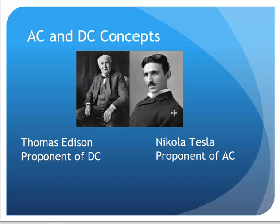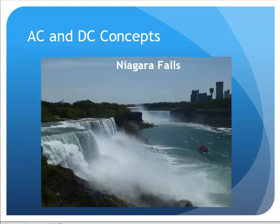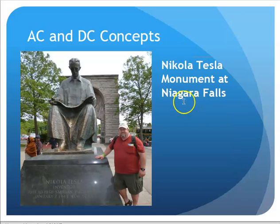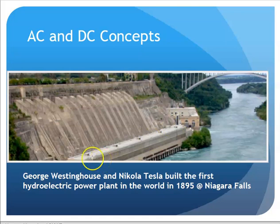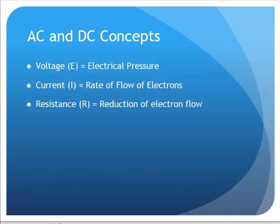Back in time there was an AC/DC competition. Edison was a proponent of DC and thought that was how things should be powered. Nikola Tesla was a proponent of AC, and we know how it ended — Tesla's approach is how we power our houses. Niagara Falls is key because Westinghouse and Nikola Tesla built the first hydroelectric plant there in 1895 to produce power using these concepts of moving coils of wire by magnets. There's actually a monument to Nikola Tesla at Niagara Falls.